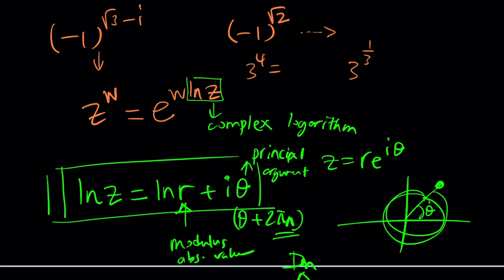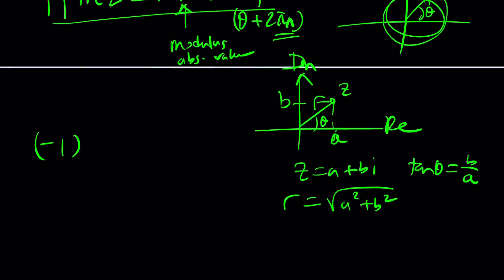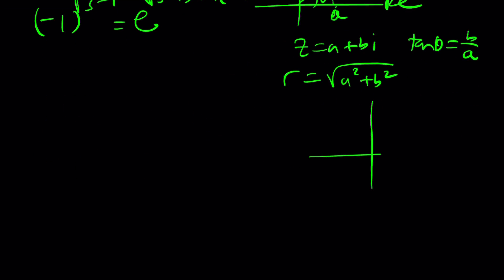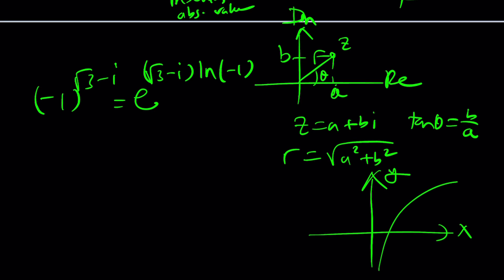Now let's go ahead and apply this to this problem. So negative one to the power root three minus i based on our definition can be written as e to the power root three minus i times ln of negative one. Normally in the real world ln of a negative number is undefined because ln is only defined for positive numbers but it's only in the real world. In the complex world ln zero is not defined either but everything else is defined even ln of a complex number.